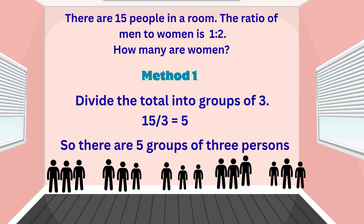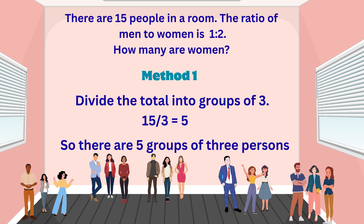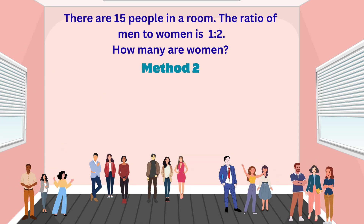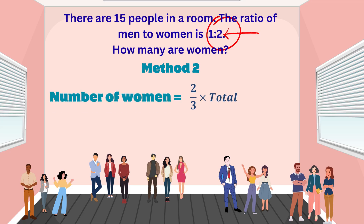Now 15 divided by three is five, so there are five groups of three. The ratio of men to women is one to two, which means for every man there are two women. That means in each group we have one man and two women, so we have a total of five men and ten women. The second method is way faster. The women's part of the ratio is two, and the sum total of both parts is three, so two-thirds of the total are women. Two-thirds times 15 is ten, so there are ten women in the room.